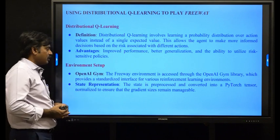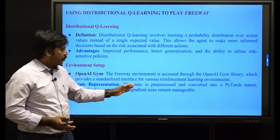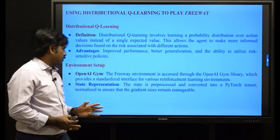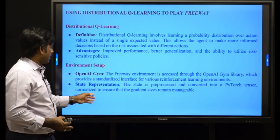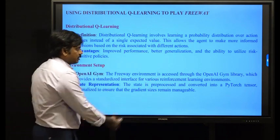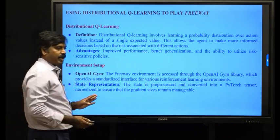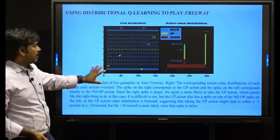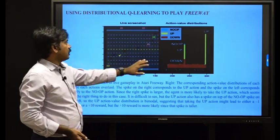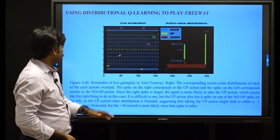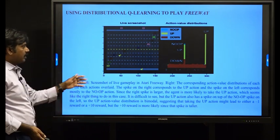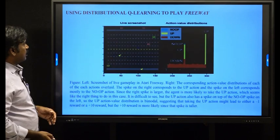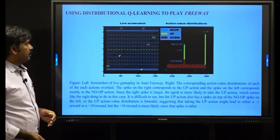For state representation, the state is preprocessed and converted into a PyTorch tensor, normalized to ensure that the gradient sizes remain manageable. This is the live screenshot for the Freeway game, which has three actions: no operation, up, and down.